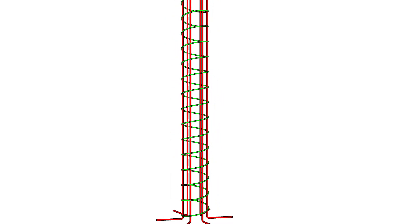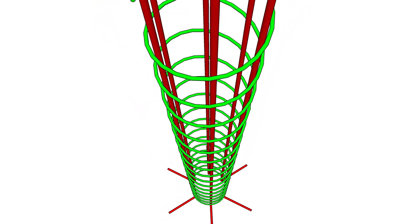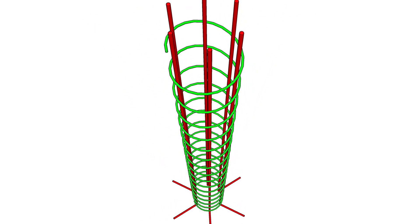The vertical rebars running the length of the column are enveloped by the spiral stirrups. These spirals not only hold the vertical rebars in place, but also provide confinement to the concrete, preventing it from cracking and failing under pressure.